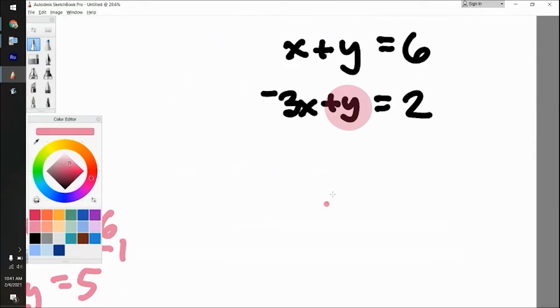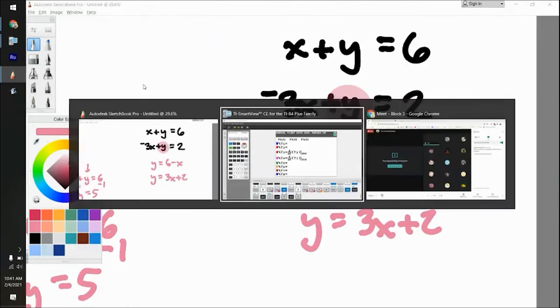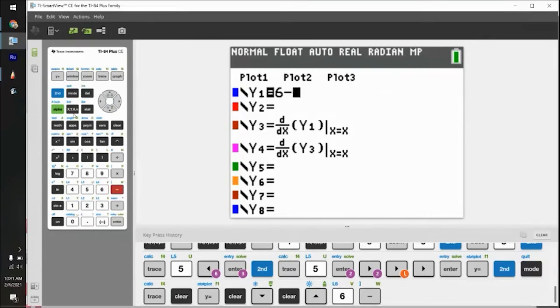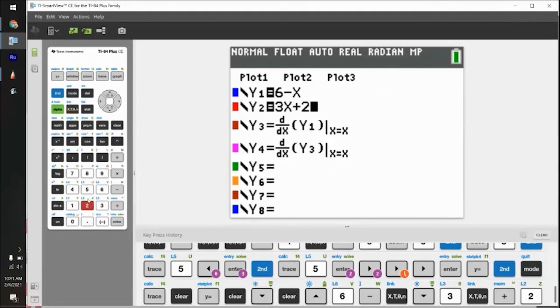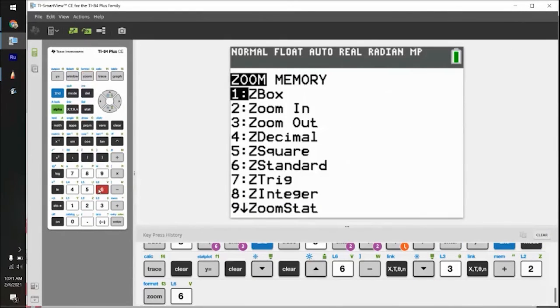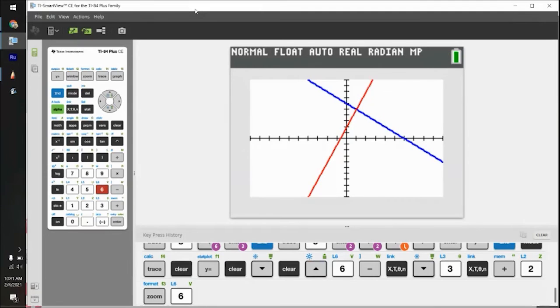So the first one I kind of already solved for before, it was just six minus x. The bottom one, if you add the three x to the other side, it's going to be three x plus two. So now we have the two y equations. So what you can do is graph one, graph the other. Wherever they intersect, that's their answer.